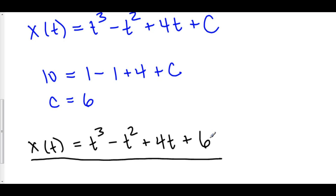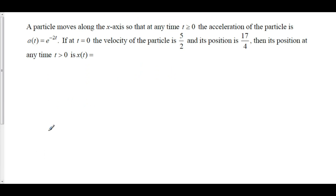We went from acceleration to position knowing the initial velocity and the initial position. Let's do one more. A particle moves along the x-axis so that at any time t greater than or equal to 0, the acceleration is a(t) = e to the negative 2t. At t equals 0, the velocity is 5 halves, and at t equals 0, the position is 17 over 4. Find the position function.